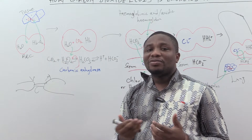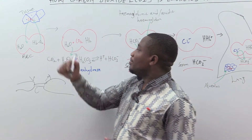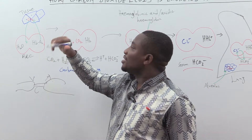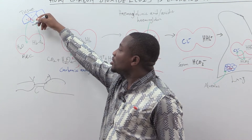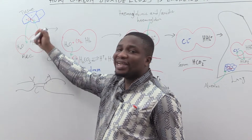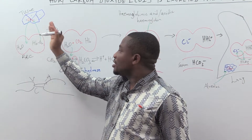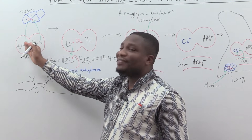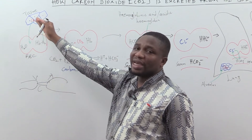This happens because of differences in partial pressures. After metabolism, the partial pressure of CO₂ in the cell is very high, and the partial pressure of oxygen is very low. Due to that gradient, carbon dioxide readily diffuses through the phospholipid membrane of the capillaries into the blood at the venular end, while oxygen moves in reverse.